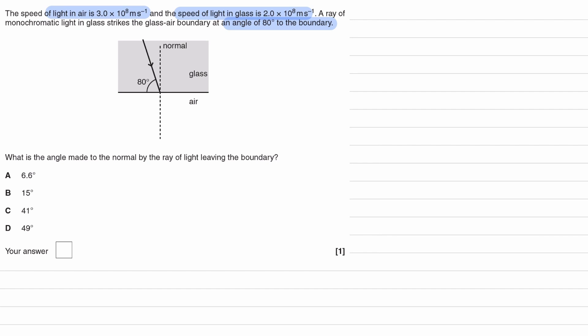We're trying to work out the angle made to the normal by the ray leaving the boundary. We are going to be using Snell's law for this equation, which is n1 sin theta 1 equals n2 sin theta 2.